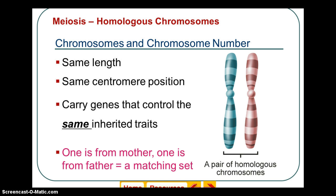Homologous chromosomes — this is not a term you'll be responsible for, but the prefix 'homo' means the same. Homologous chromosomes are the same chromosome from each parent: chromosomes 1 through 23 from the father, and chromosomes 1 through 23 from the mother. 23 plus 23 is 46. This concept will not be on your Unit 7 test.